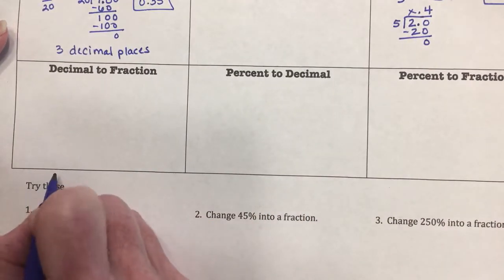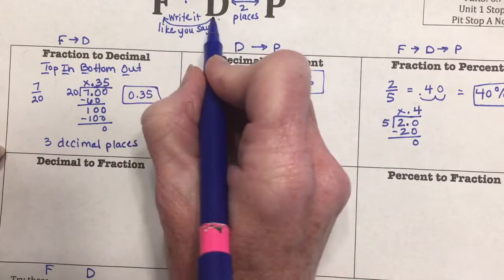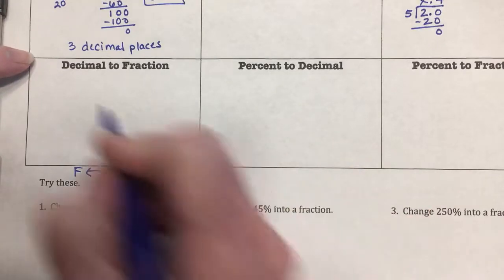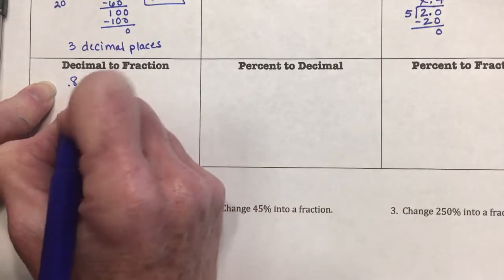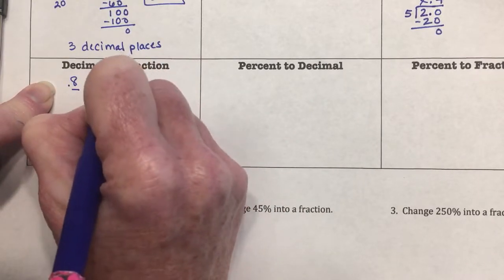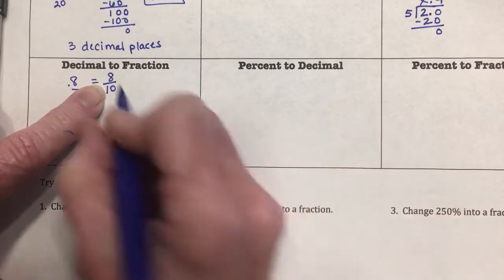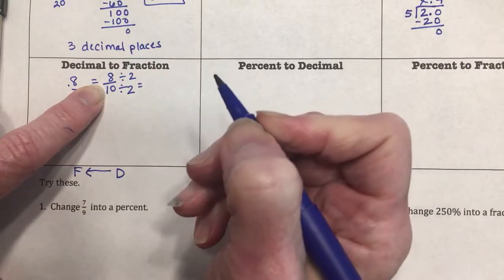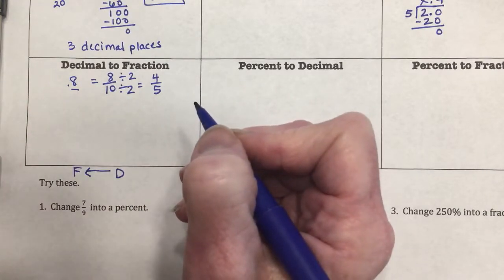For decimal to fraction, I write it like I say it using place value. For 0.8: said with place value, that's 8 tenths, so I write 8 over 10. I never leave a fraction unsimplified — 8 and 10 have a common factor of 2, so dividing both by 2 gives 4/5. So 0.8 = 4/5.